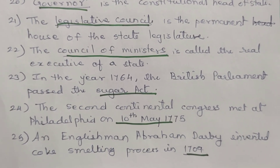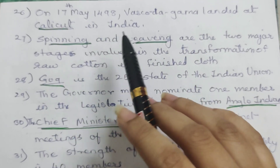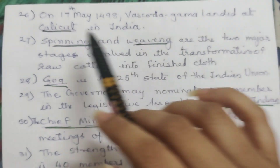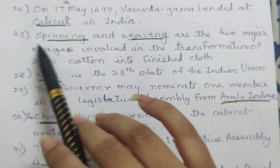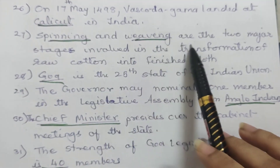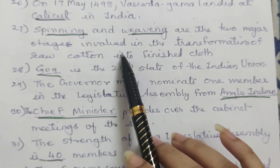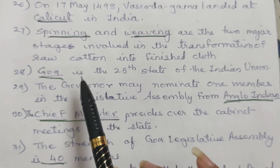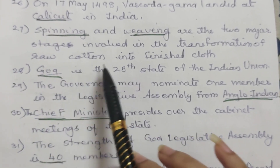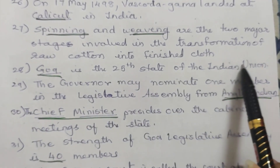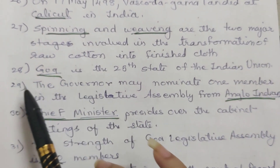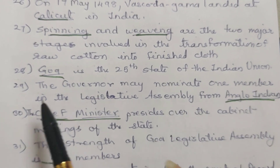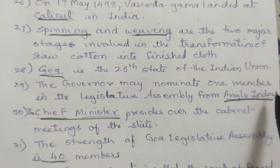26. On 17th May 1498, Vasco da Gama landed at Calicut in India. 27. Spinning and weaving are the two major stages involved in the transformation of raw cotton into finished cloth. 28. Goa is the 25th state of the Indian Union. 29. The Governor may nominate one member in the Legislative Assembly from the Anglo-Indian community.